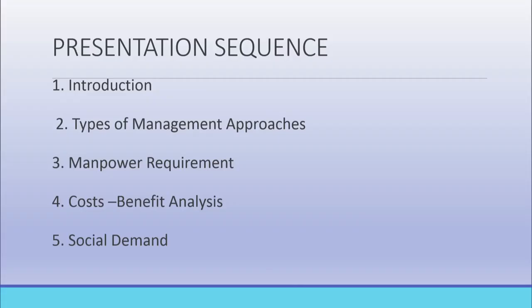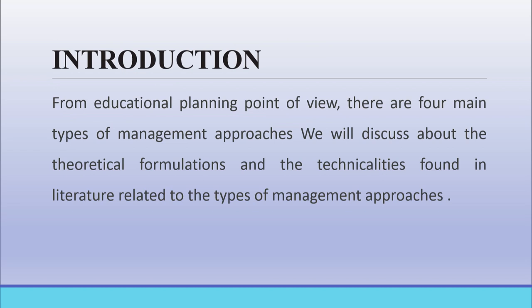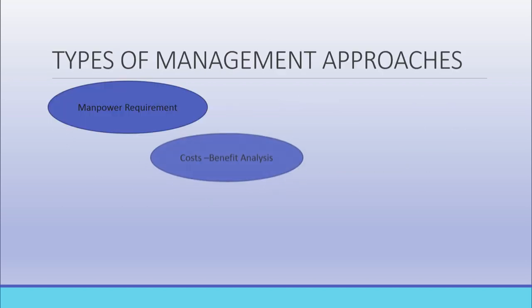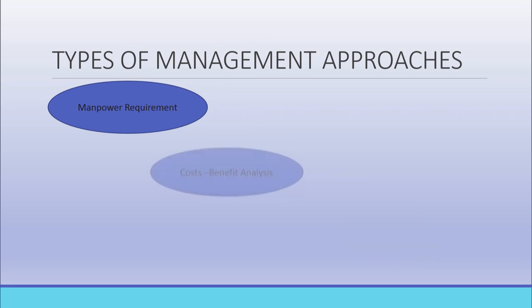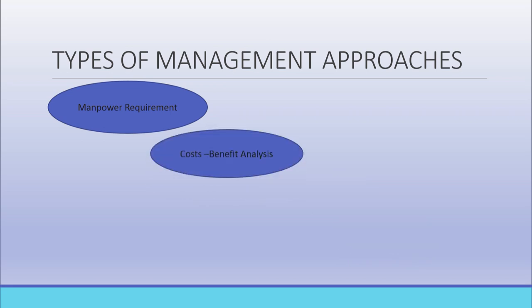The educational planning process typically includes an expressed vision of the future education sector, creation of objectives, survey of existing educational approaches and consideration of required new ones, clarification of projects, tasks and targets, and evaluation of required human, monetary and physical assets. Today we will discuss the types of management approaches, which include manpower requirement, cost-benefit analysis, social demand, and social justice.